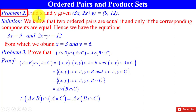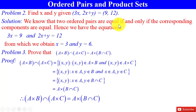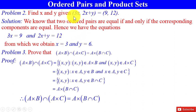Problem 2: Find x and y given that the ordered pair (3x, 2x+y) = (9, 12). We know that two ordered pairs are equal if and only if the corresponding components are equal. Hence we have the equations: 3x = 9 and 2x + y = 12. From these two equations, we get x = 3 and y = 6.